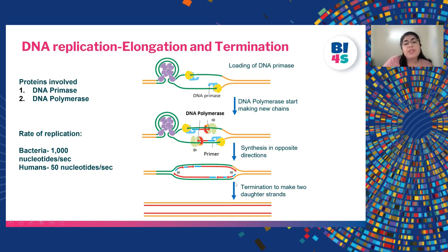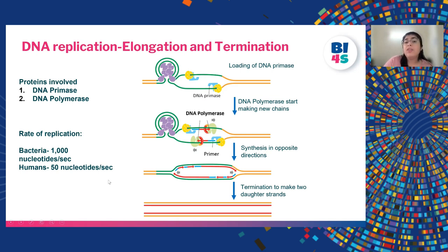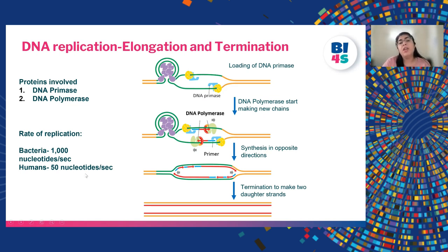In bacteria the speed of replication is about 1000 nucleotides per second, but in humans it is only 50 nucleotides per second. Considering humans have 3.3 billion nucleotides, at this speed it would take at least a month — but this doesn't happen because in humans we have multiple replication origins, so replication can start at multiple points at once and the entire process takes about only one hour to complete.